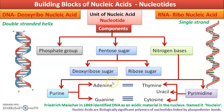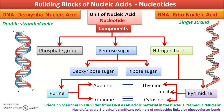Nucleic acids are of two types — biologically significant polymers. The two types are DNA (deoxyribonucleic acid) and RNA (ribonucleic acid). The unit or building block of nucleic acid is called a nucleotide. Just like amino acids are the building blocks of proteins, and monosaccharides are the building blocks of polysaccharide carbohydrates.